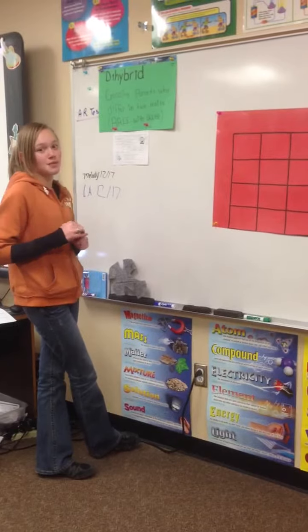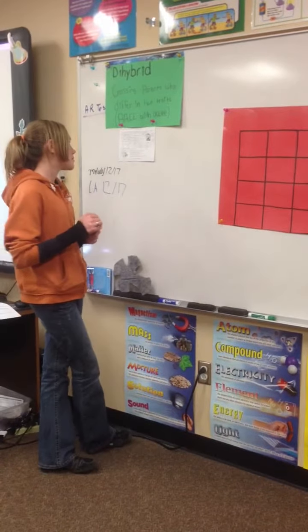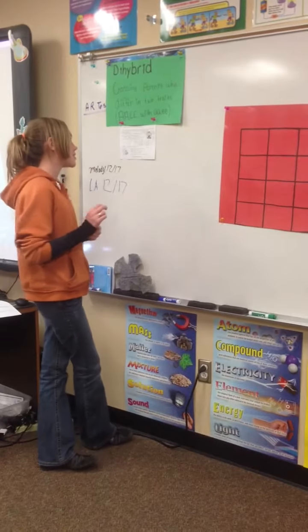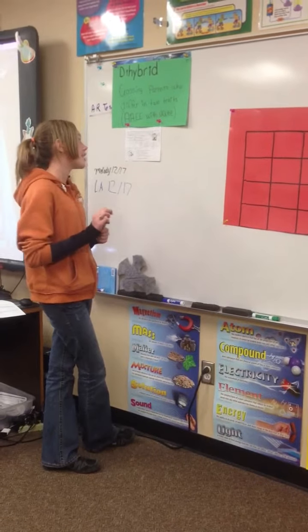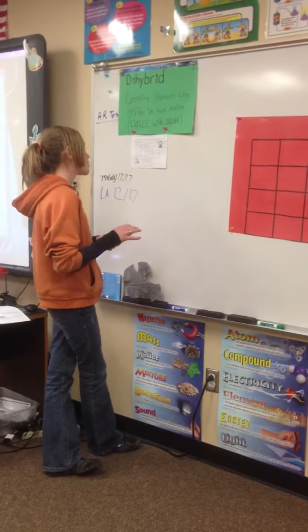Again, we're going to use SpongeBob as examples. As we know, SpongeBob is heterozygous for his yellow body color and his square pants, while his wife, SpongeSusie, is blue and has round pants.